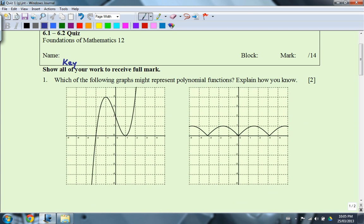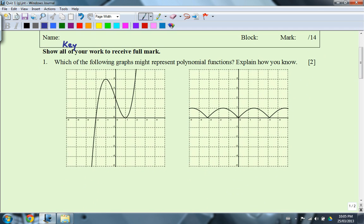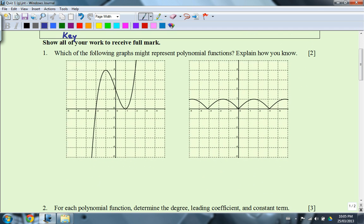So question number one asks, which of the following graphs might represent polynomial functions? And explain how you know. So in class, I did say that the reason why it says might and not is a polynomial function is because the graph may do something funny after the bounds of what you can see. But as far as you can tell, the first graph here does look like a cubic function. So it should be a polynomial function.